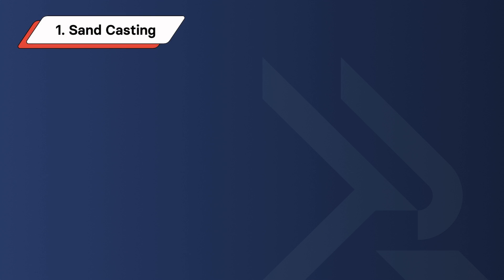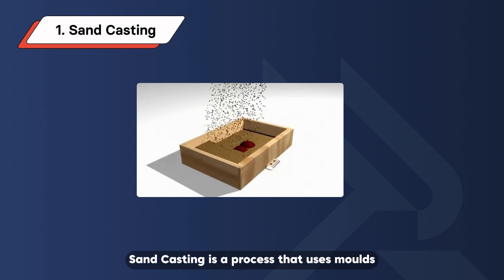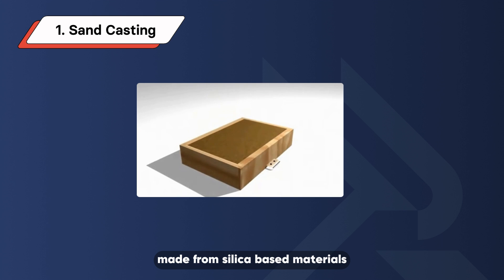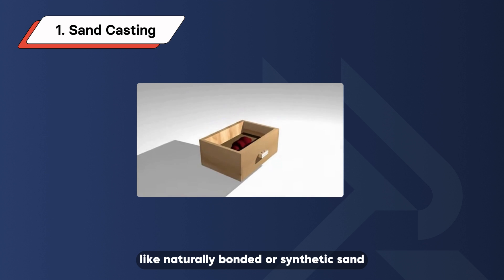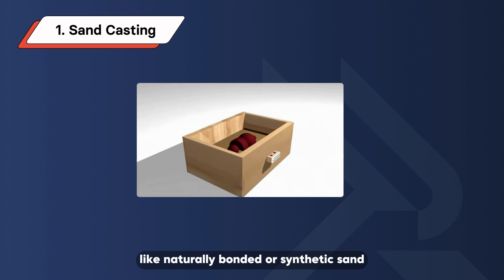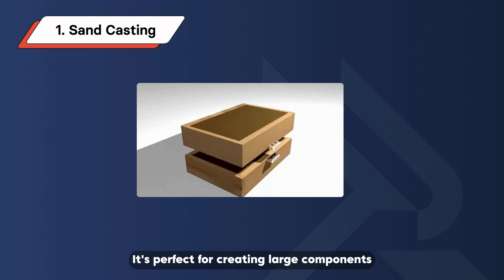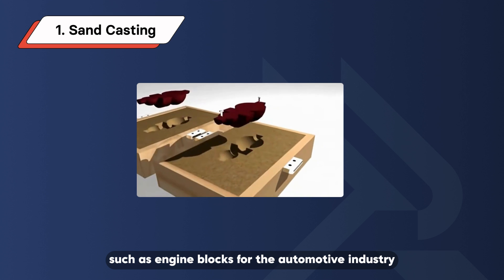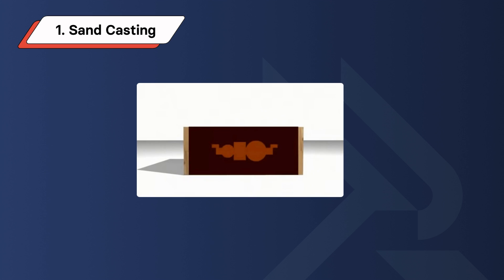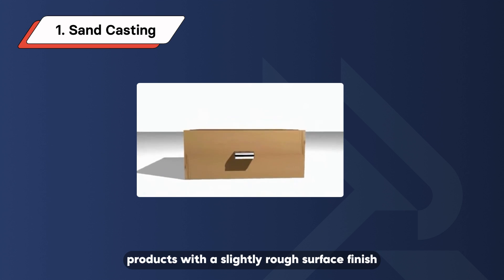Sand Casting. Sand casting is a process that uses molds made from silica-based materials like naturally bonded or synthetic sand. It's perfect for creating large components such as engine blocks for the automotive industry. However, it can result in products with a slightly rough surface finish.